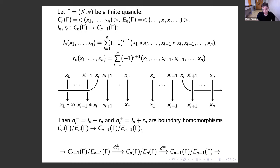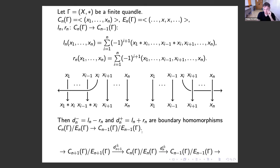We can introduce two different boundary homomorphisms: D⁻, equal to the difference Lₙ − Rₙ, and D⁺, equal to their sum. Both define boundary homomorphisms from the factor groups Cₙ/Eₙ to Cₙ₋₁/Eₙ₋₁. In this way we obtain two chain complexes — a negative one, where all boundary homomorphisms are differences of Lₙ and Rₙ, and a positive chain complex. We can study these by computing homology or cohomology groups, but for our purpose we need only certain elements from this complex to extract a knot invariant.